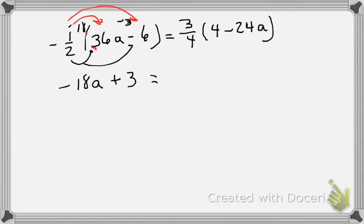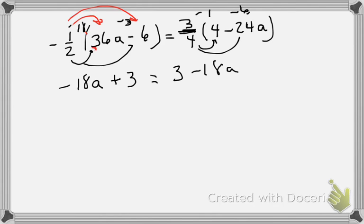Now 4 goes into 4 one time, and 1 times 3 is 3. The reason I say 'goes into' is because that's the divide sign. Then 4 goes into 24 — that's negative 6 — and negative 6 times 3 is negative 18a. Now I can subtract both sides just like before.